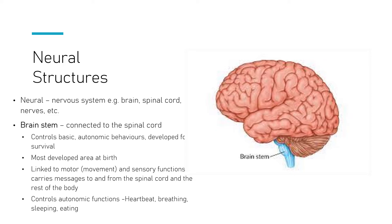This developmental psychology topic covers what happens from conception all the way through. The brainstem is linked to what are known as motor and sensory functions — sometimes combined as 'sensorimotor.' Motor just means movement, and sensory relates to the senses: taking in the world through touch, taste, smell, etc. The brainstem carries messages to and from the spinal cord and the rest of the body — it's the way the brain gets those signals.